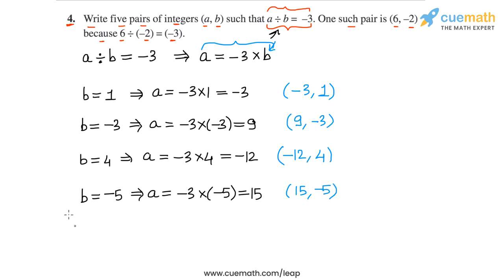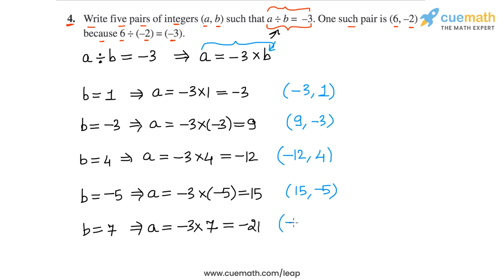Finally, for our fifth pair, let's take b equal to 7. For b equal to 7, a is equal to minus 3 times 7, which is equal to minus 21. So our fifth pair of integers is a equal to minus 21 and b equal to 7. Those are the five pairs found for this question.